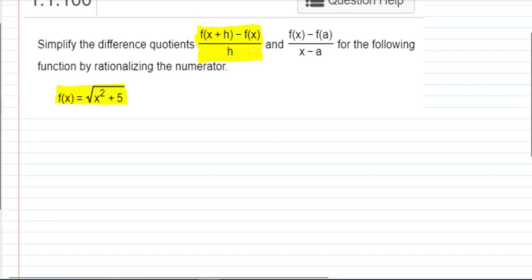And the function that we're going to use is f of x equals square root of x squared plus 5.